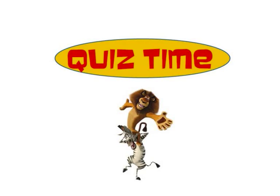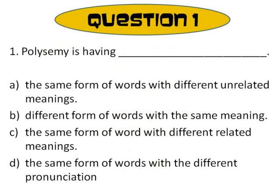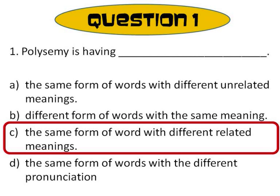Surprise! It's quiz time! Answer the following questions carefully. Question 1: Polysemy is having — A. The same form of words with different unrelated meanings. B. Different form of words with the same meaning. C. The same form of words with different related meanings. Or D. The same form of words with different pronunciation. If you said the answer was C — the same form of word with different related meanings — you are absolutely right. Remember, polysemy is having the exact same form of word which has multiple meanings that are related.